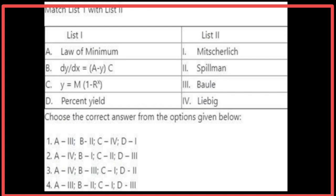Matching List 1 with List 2 for laws and equations: The law of minima was given by Liebig. dy/dx = (a−y)·c was given by Mitscherlich. y = m(1−r^x) was given by Spillman. Percentage yield formula was given by Baule.